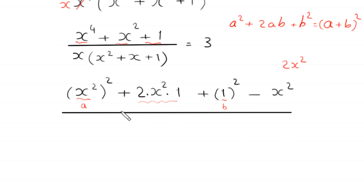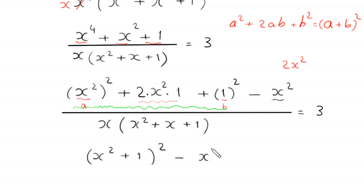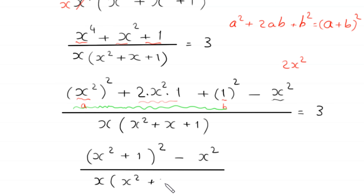In the denominator we have x times x squared plus x plus 1. This is equal to 3. By using the algebraic identity, x squared whole squared plus 2x squared plus 1 squared becomes x squared plus 1 whole squared minus x squared, divided by x times x squared plus x plus 1, equal to 3.